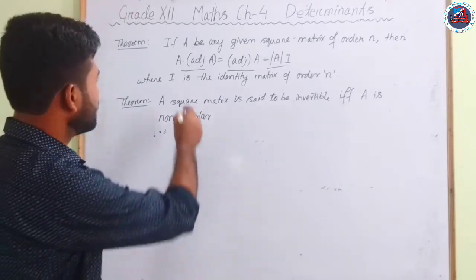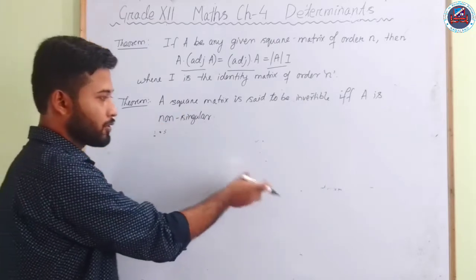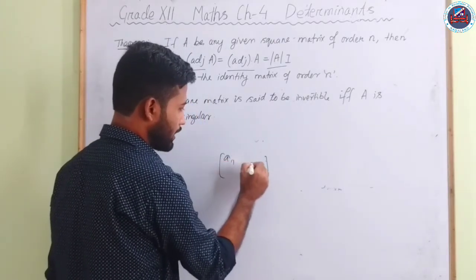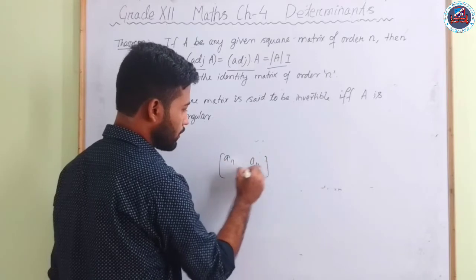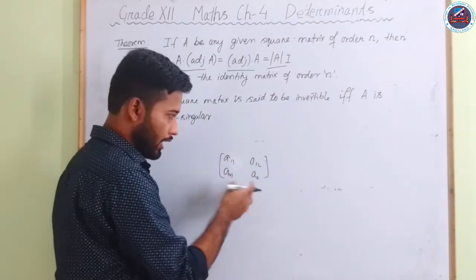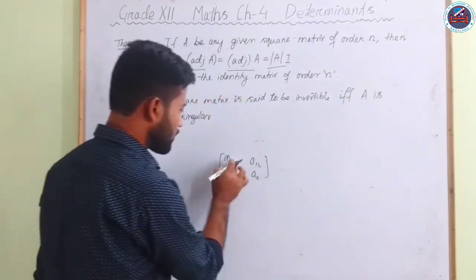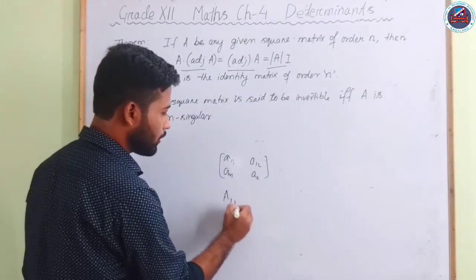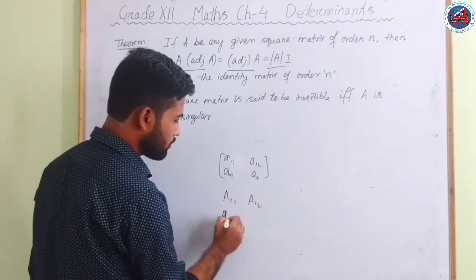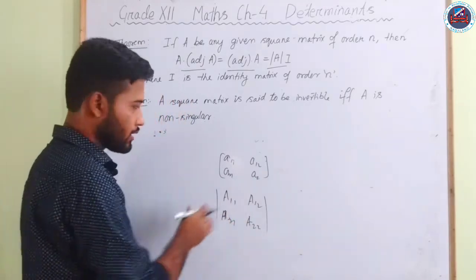For a 2×2 matrix with elements a₁₁, a₁₂, a₂₁, a₂₂, we need to find the cofactors of each element. The cofactors will be A₁₁, A₁₂, A₂₁, A₂₂, forming a new cofactor matrix.